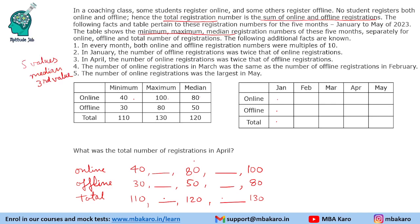It is given that in every month both online and offline registration numbers were multiples of 10. You could save time by just working with reduced numbers like 4, 8, 10, 3, 5, 8 and so on, but it's not a big time saver since there are only a few values to fill. If these were multiples of 100, it would make more sense.